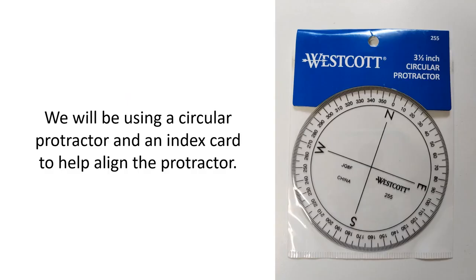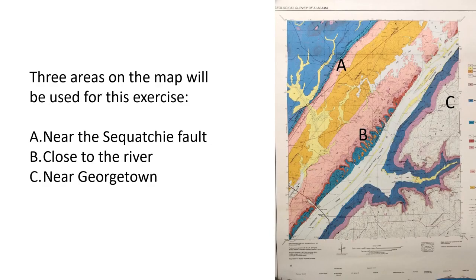For this exercise, we will be using a circular protractor and an index card to help align the protractor. Three areas of the map will be used for this exercise. They are labeled A, B, and C on the picture.